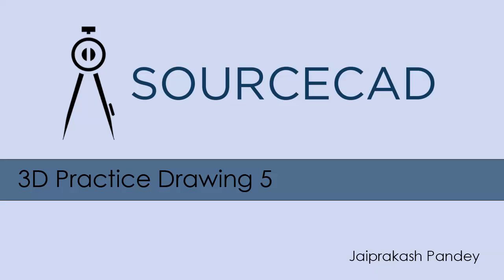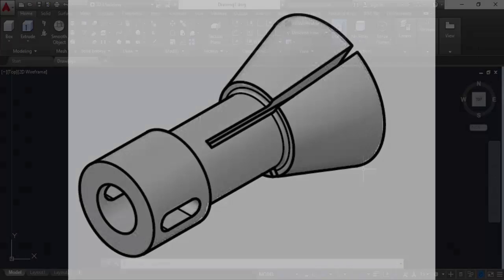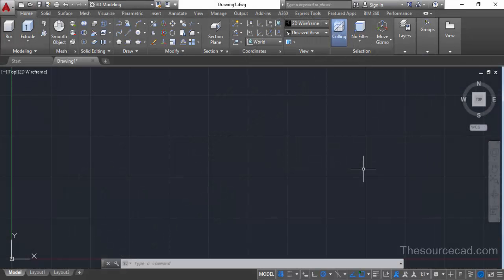Hi and welcome to SourceCAD. In this video I will make a simple 3D drawing of an indexing fixture in AutoCAD, and I will use the revolve command to make this drawing. Let's start with the 3D modeling workspace.